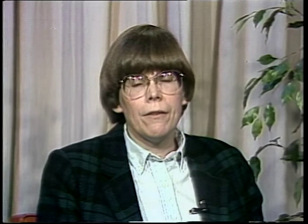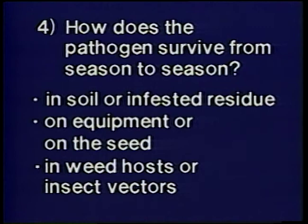If the weather remains hot and dry, foliage diseases are unlikely to develop even if the pathogen is present and the plants are a susceptible variety. Fourth, how does the pathogen survive from season to season? Does it survive in the soil or in infested residue left on the soil surface? Does it survive in soil on equipment or in or on the seed? Does it survive in weed hosts or insect vectors, or survive in southern climates and is then carried back into our area each season? Accurately identifying the disease and knowing this basic information provides what is necessary to make profitable and effective control decisions.